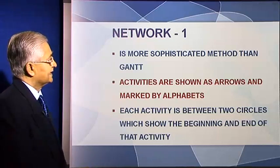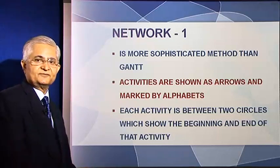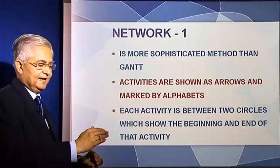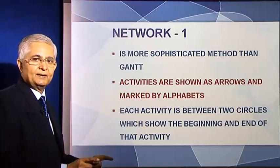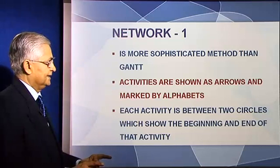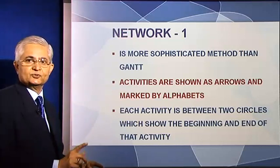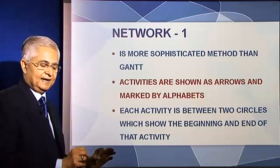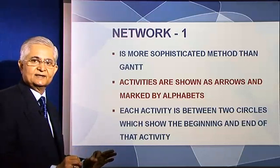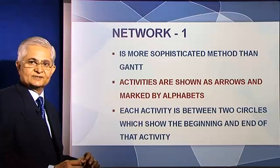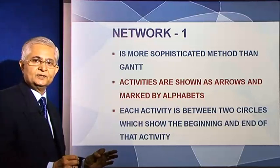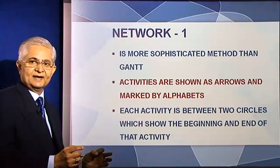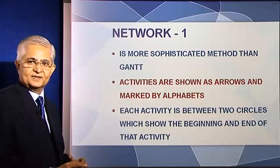This network analysis is a more sophisticated method than the Gantt chart. The various activities A to G are each shown by an arrow and they are marked by alphabets. Each arrow begins at a circle and ends at a circle. These circles are events.